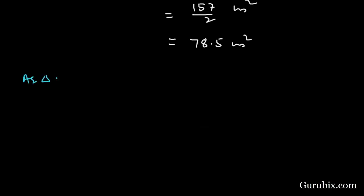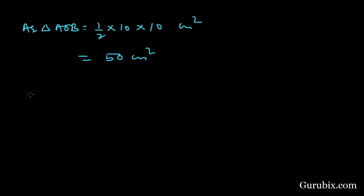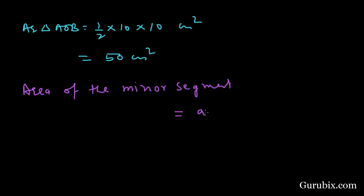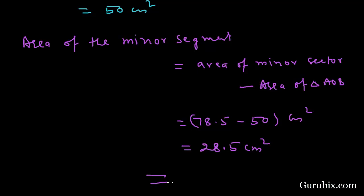Now we shall find the area of the minor segment. The area of the minor segment equals the area of the minor sector minus the area of triangle AOB. This means 78.5 minus 50 centimeters squared, which equals 28.5 centimeters squared. This is the solution of the question. Thank you.